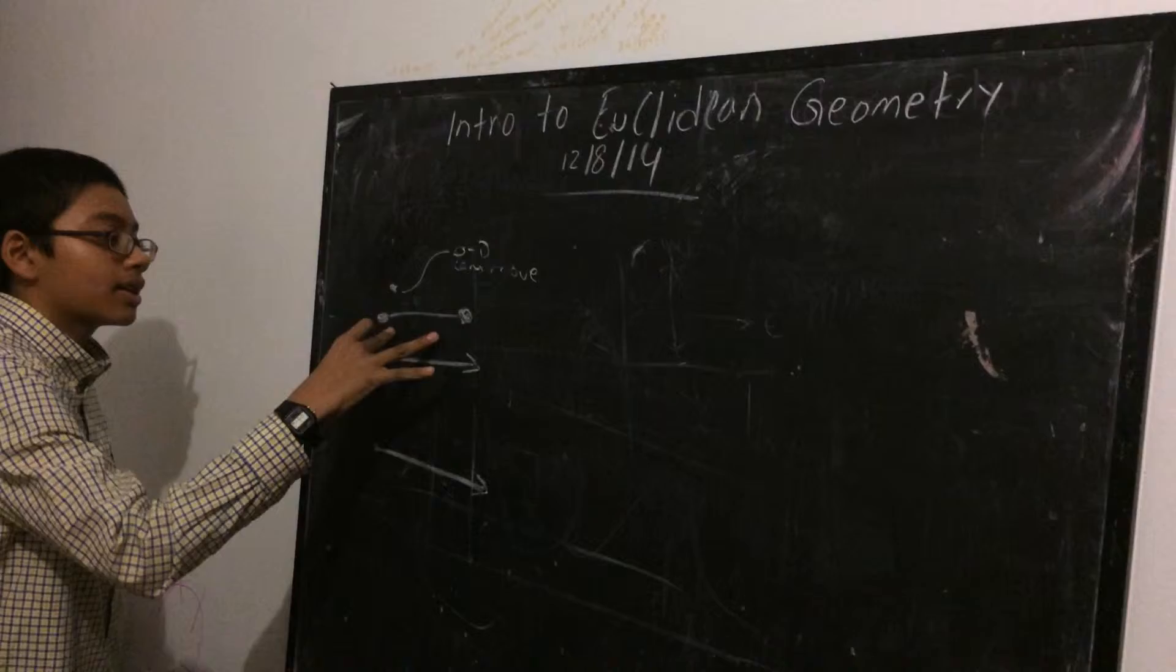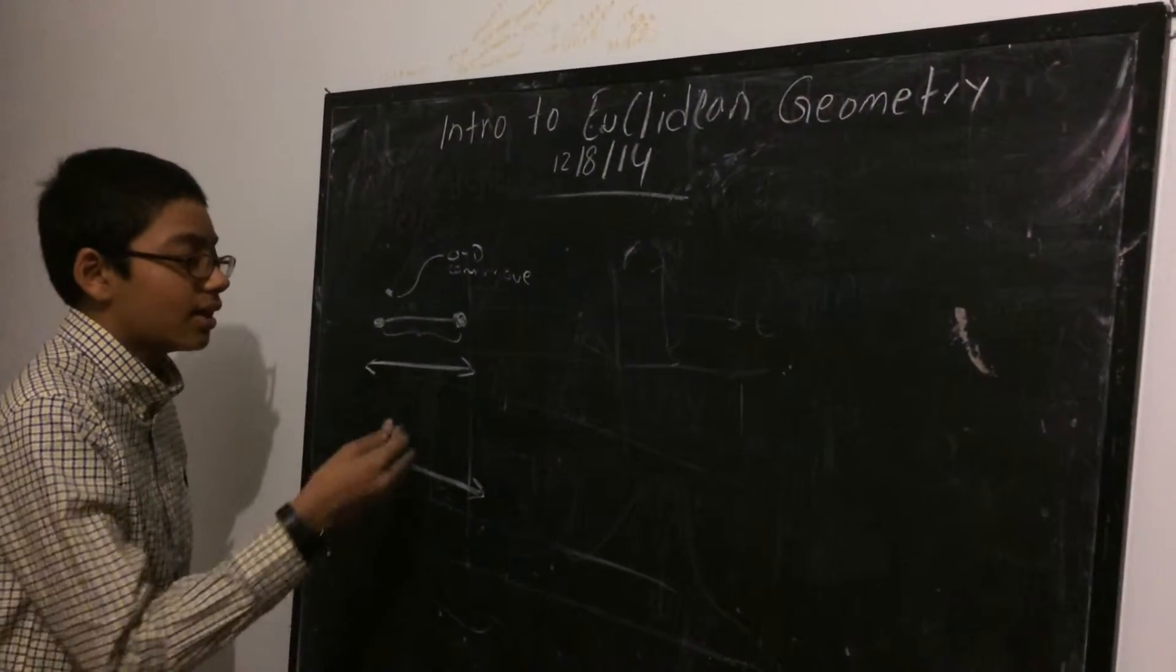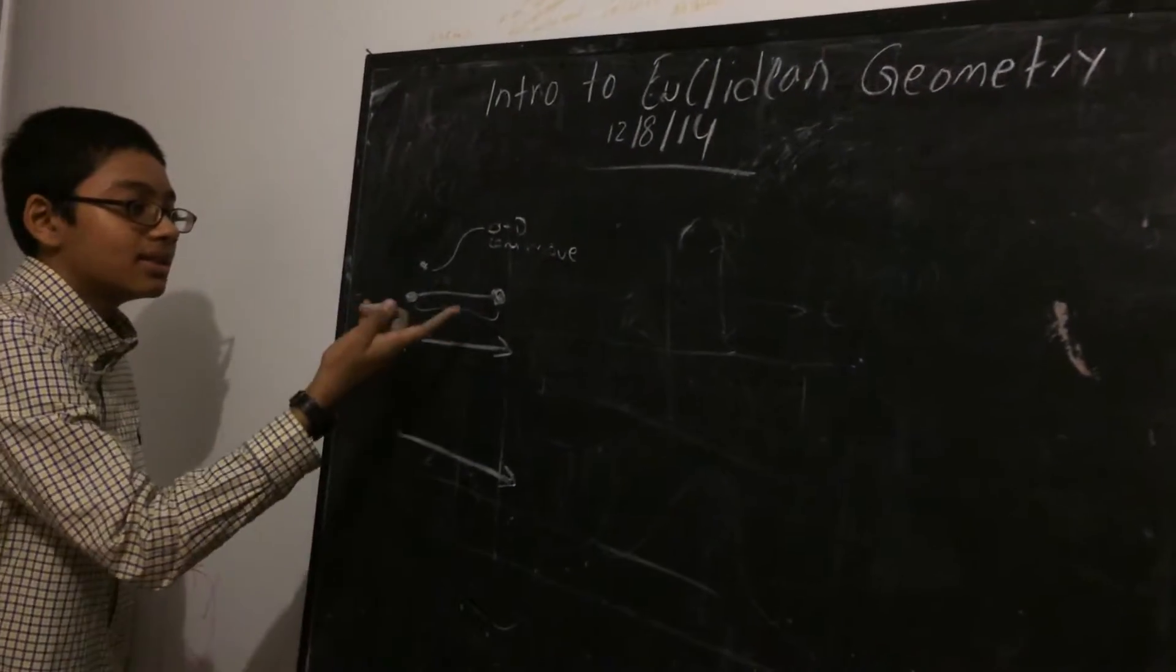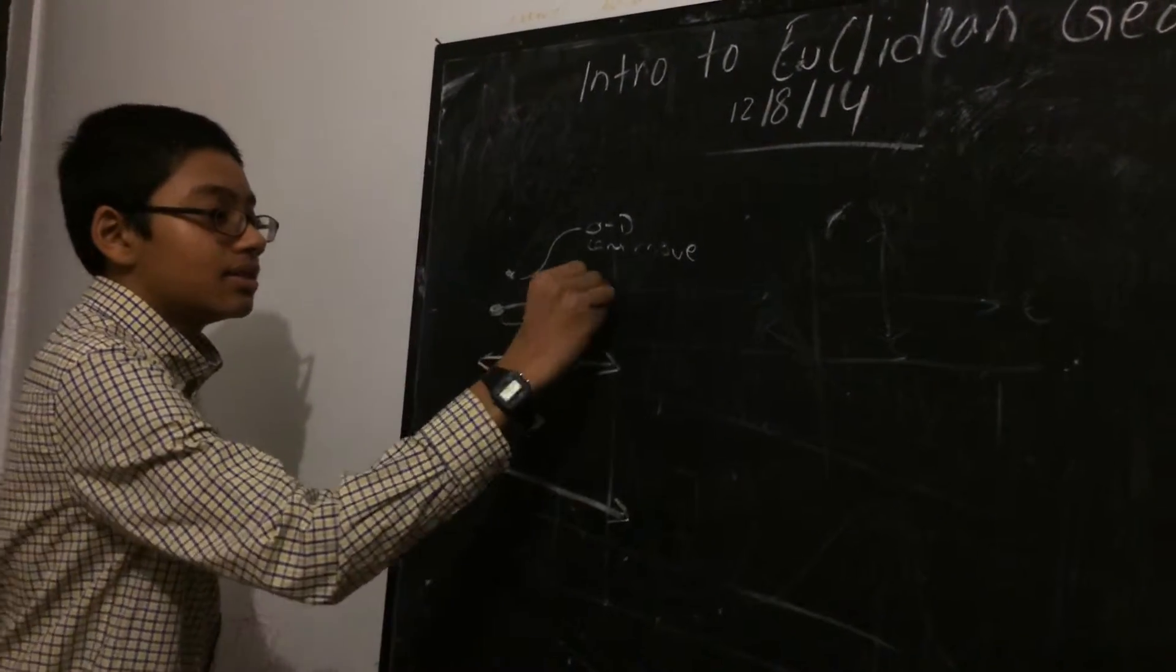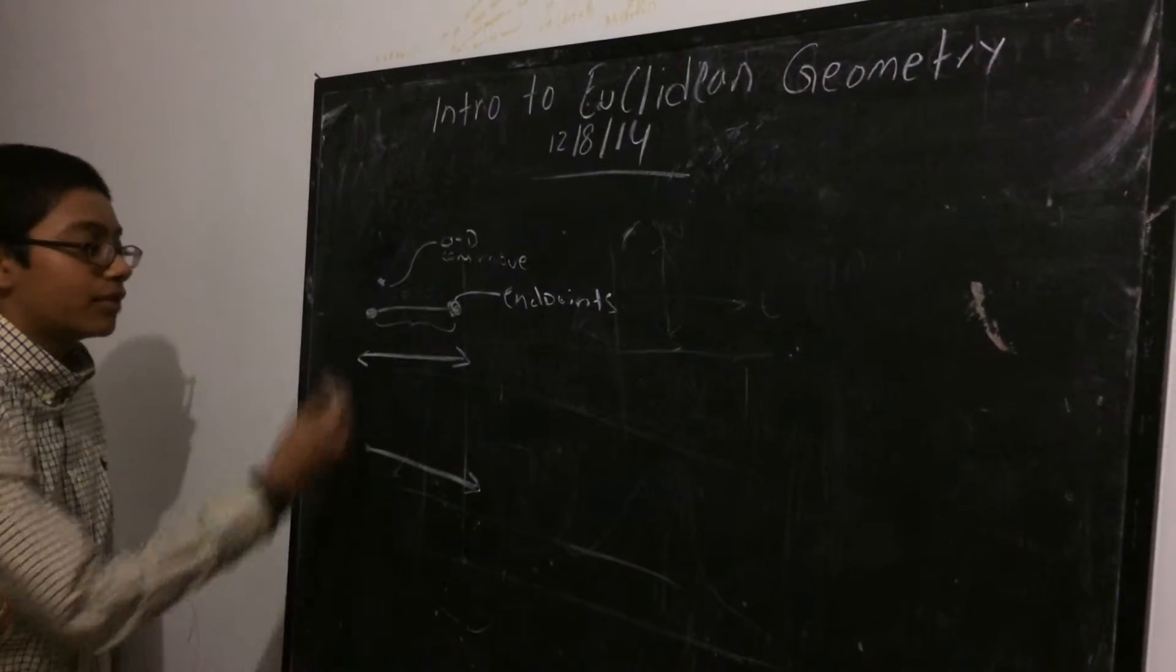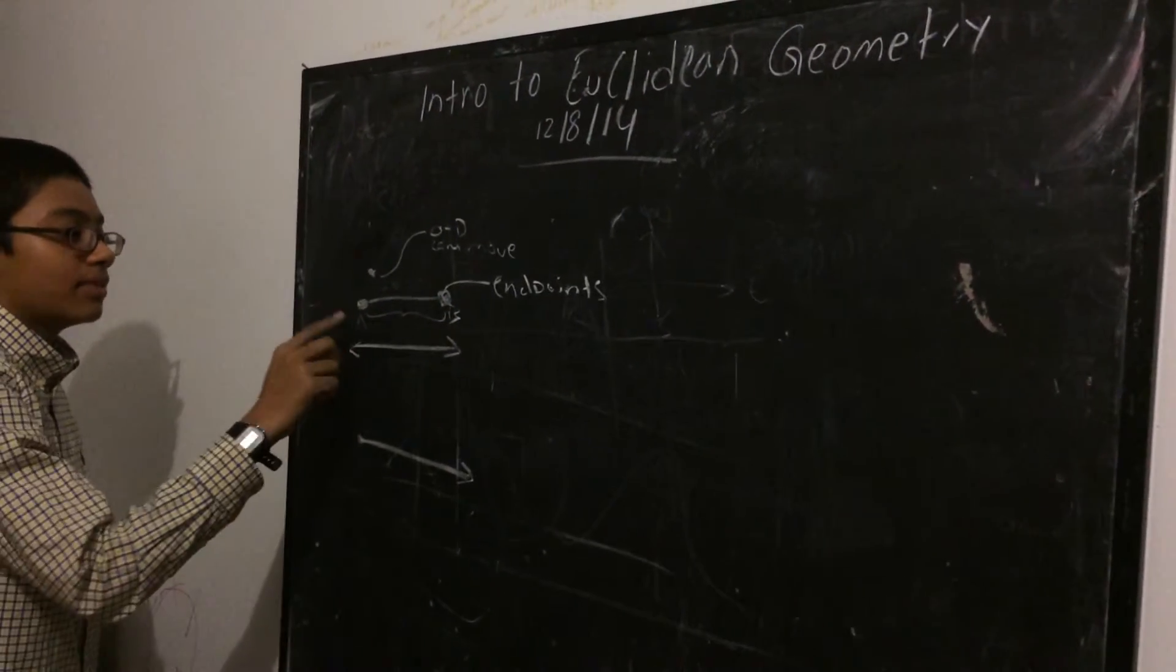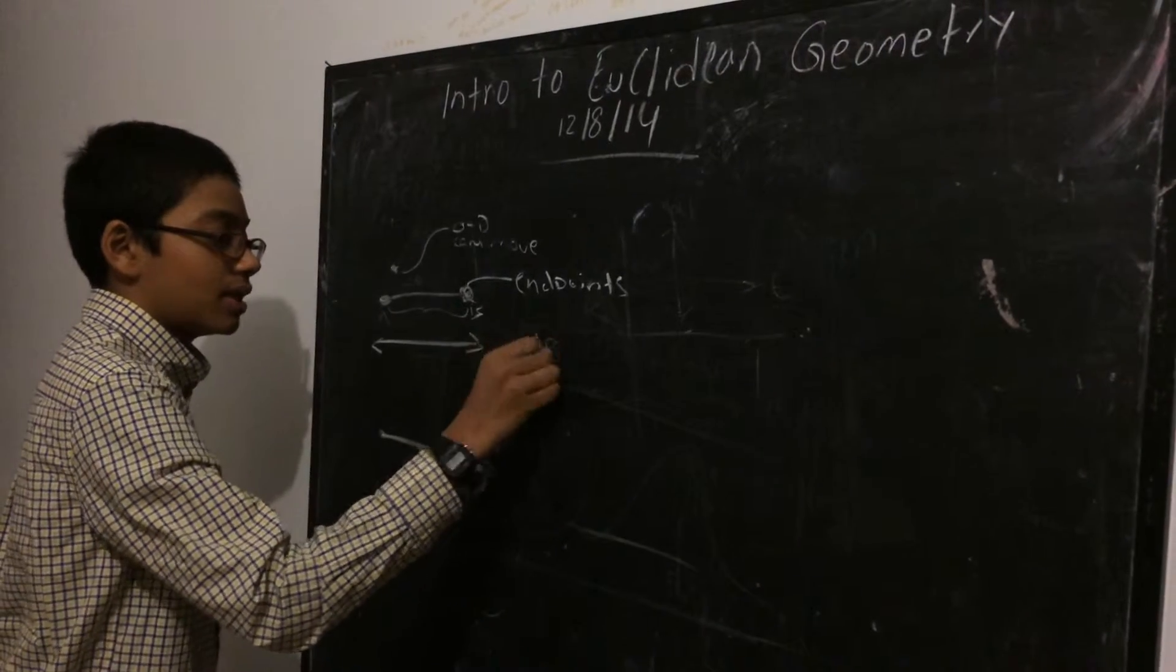If you connect two points, then you have a line segment. A line segment, it doesn't, it's finite, it doesn't go on forever in either direction. And these two little guys are called endpoints. And we can label these as endpoint A and endpoint B and call this line segment AB.